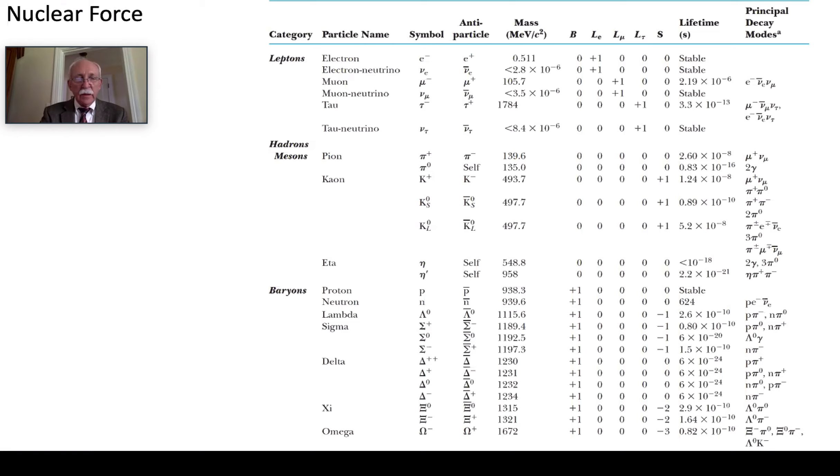These neutrino detectors are rather large but there are quite a number of them around the world all tuned to looking at different kinds of events and different kinds of measurements of the neutrinos. And you notice there are three different kinds of neutrinos plus their antiparticles.